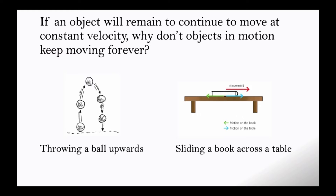If an object will continue to move at constant velocity, why don't objects in motion keep moving forever? For example, if you throw a ball upwards, it will eventually slow down and fall because of the force of gravity. A book sliding across the table slows down and stops because of the force of friction acting on it.